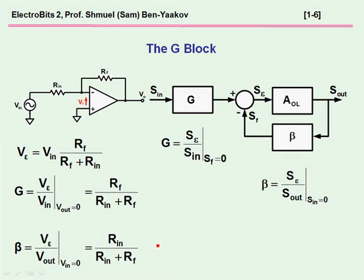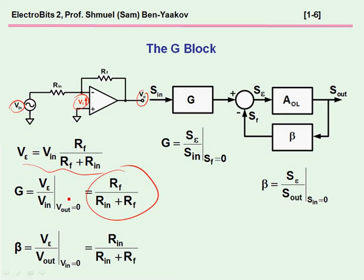The value for g is simple to get. We assume that V-out is zero, and then we look at the relationship between V-in and V-epsilon. What we have here is a voltage divider, so g is nothing but this transfer ratio. Beta, on the other hand, which is the relationship between V-out and the signal fed back when V-in is zero, is again a voltage divider of a different value.